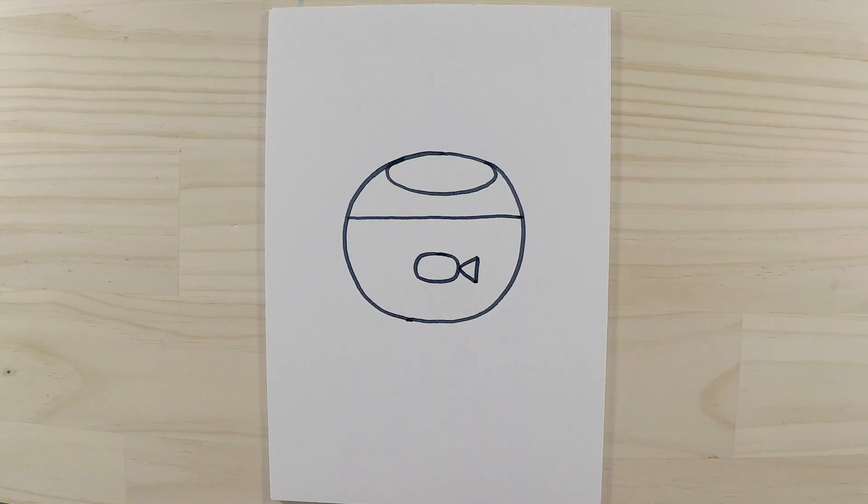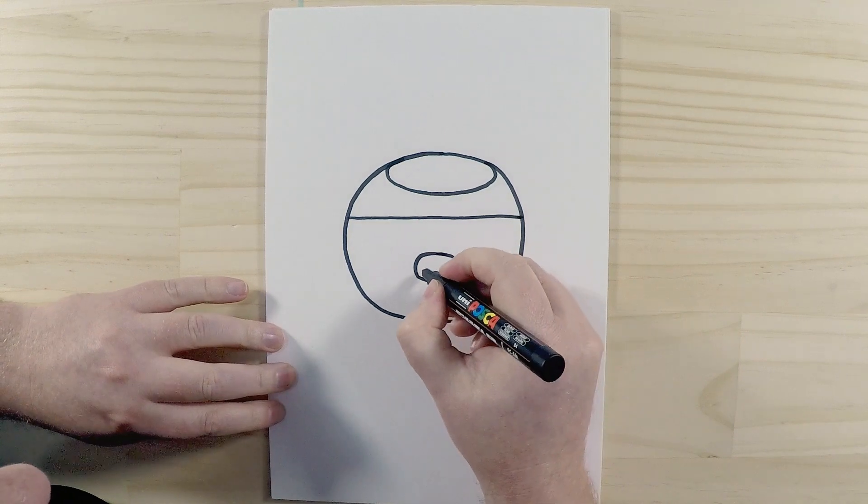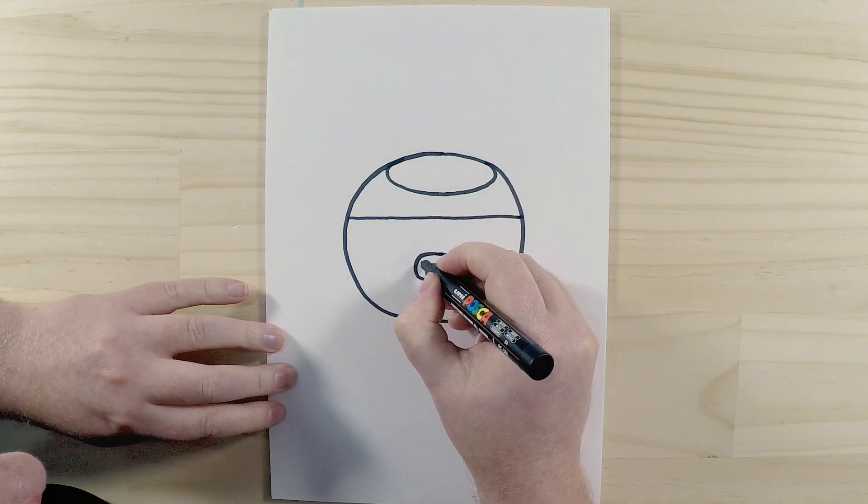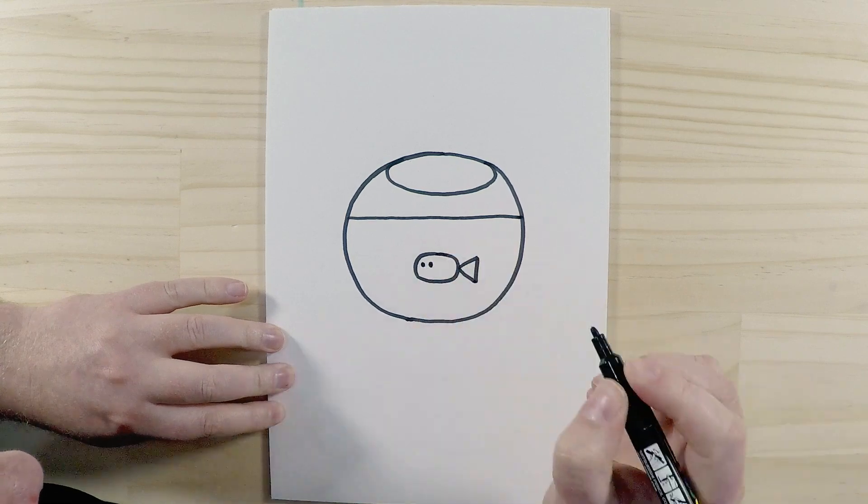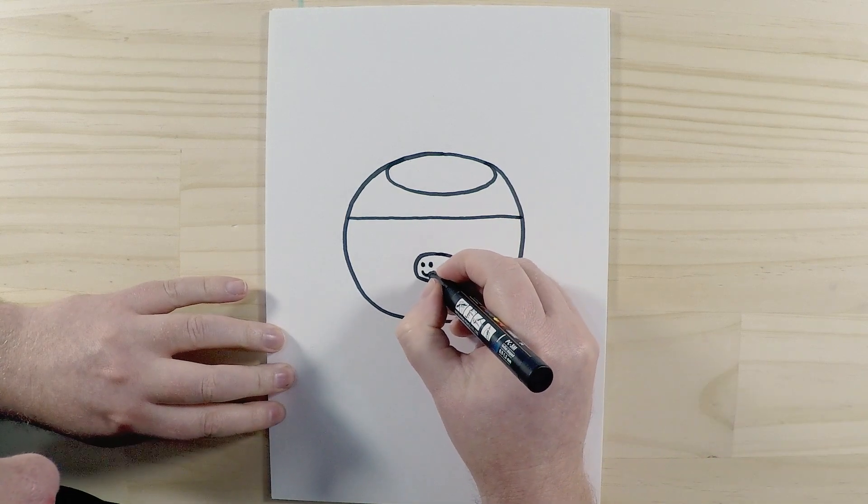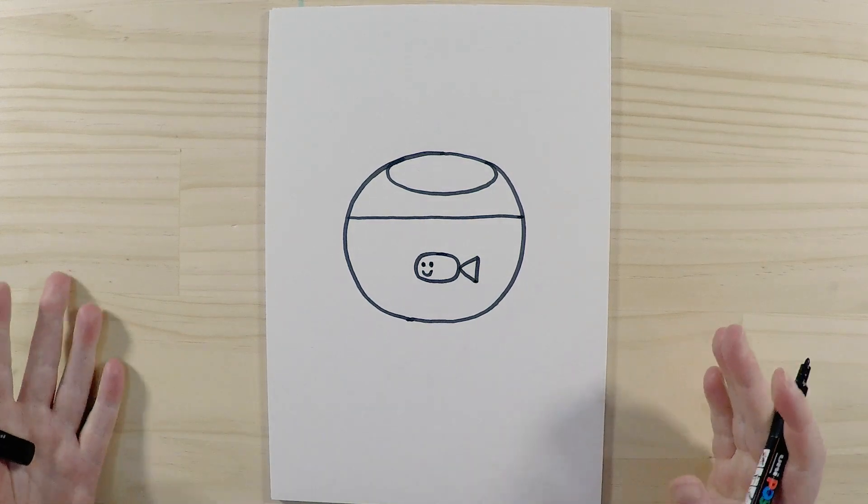Alright, so the next thing we're going to do is the face, and I'm going to get a smaller pen for that. And it's very simple. It's got two round eyes. Like that. And a smiley face.